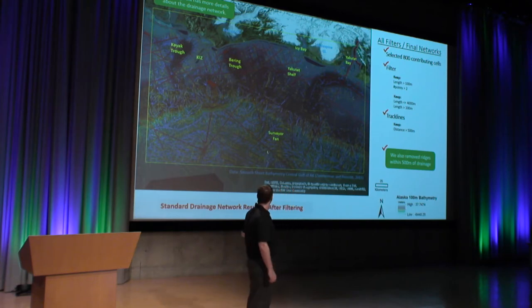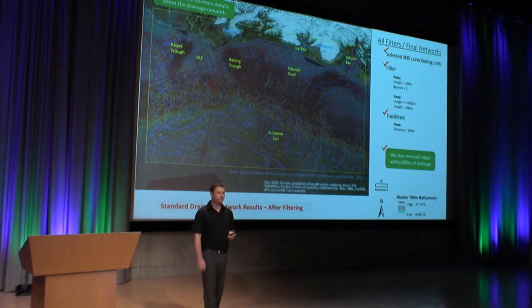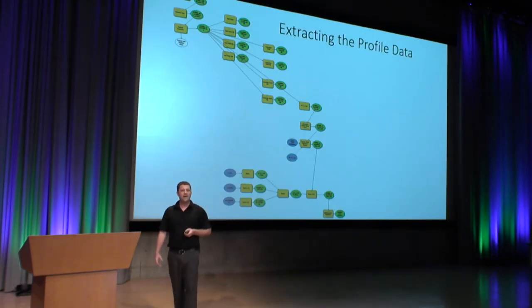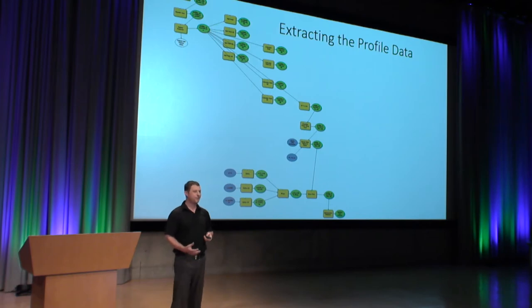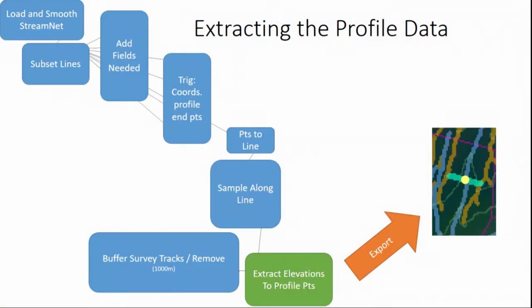We'd call what you see gullies in blue, and ridges are here in red. Now that we have our drainage network, we want to extract profiles. We went back to Model Builder. What we do is smooth our stream network, take a subset of those lines, add fields — specifically the endpoints to the profile — and then use the points-to-line tool to generate samples along that line.